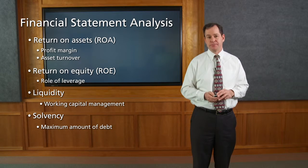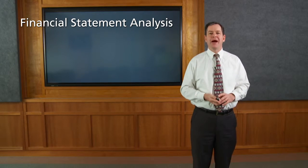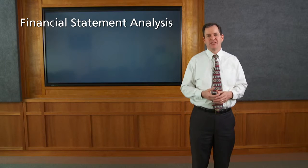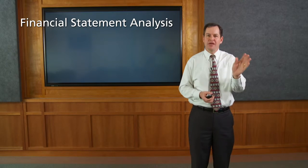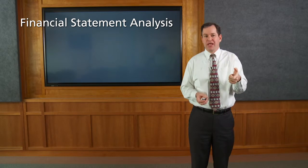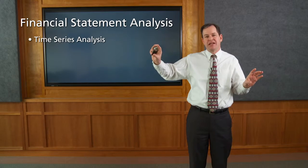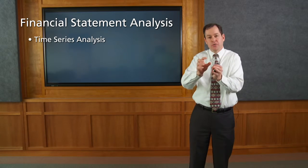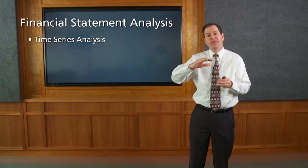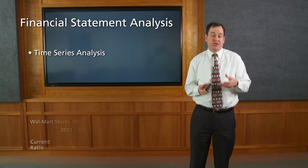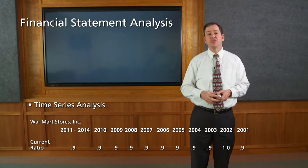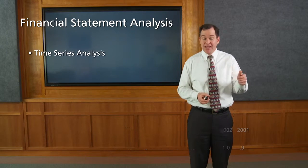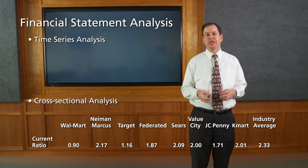When we calculate a ratio — say a solvency ratio of 40% — the response is: so what? What's important is that we compare the ratio with a benchmark. There are two key benchmarks. First is time series analysis, where we compare Walmart's ratio for this period with how it has historically trended over time. For instance, here we have Walmart's current ratio going back to 2001, and you can see the ratio hasn't changed much over that time period.